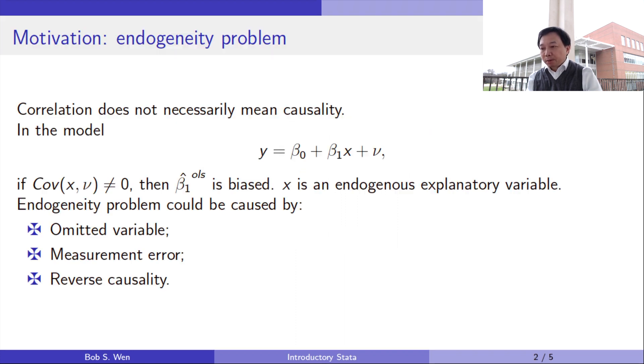In the model, if the explanatory variable of interest is correlated with the error term, then the OLS estimate of beta 1 is biased. The endogeneity could be caused by omitted variables, measurement errors, or reverse causality.